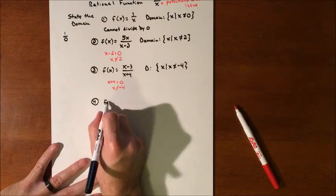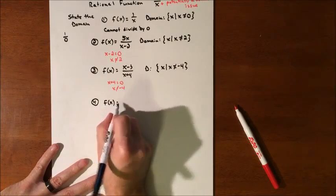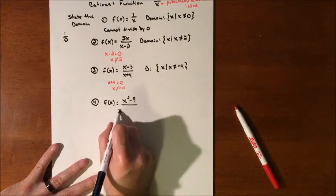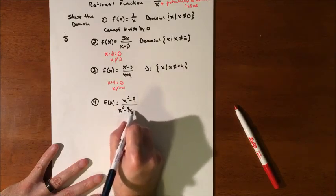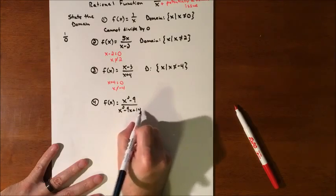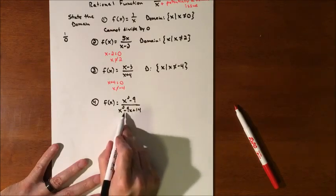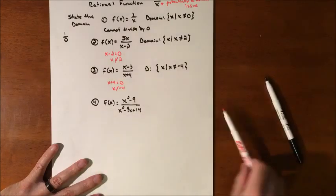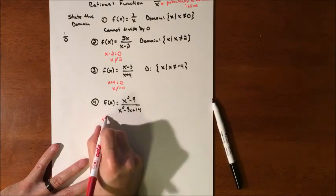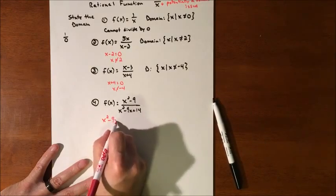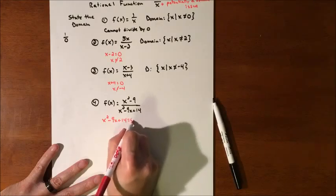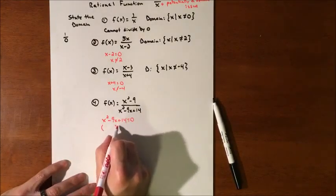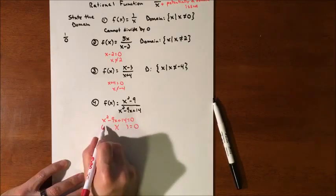So if we have X squared minus nine divided by X squared minus 9X plus 14, we have a quadratic in the denominator, which means there's potential for two issues. So I'm going to need to solve that. So that quadratic, I don't want it to equal zero. So I'm going to set it equal to zero. And this one is factorable. So I'll factor it.